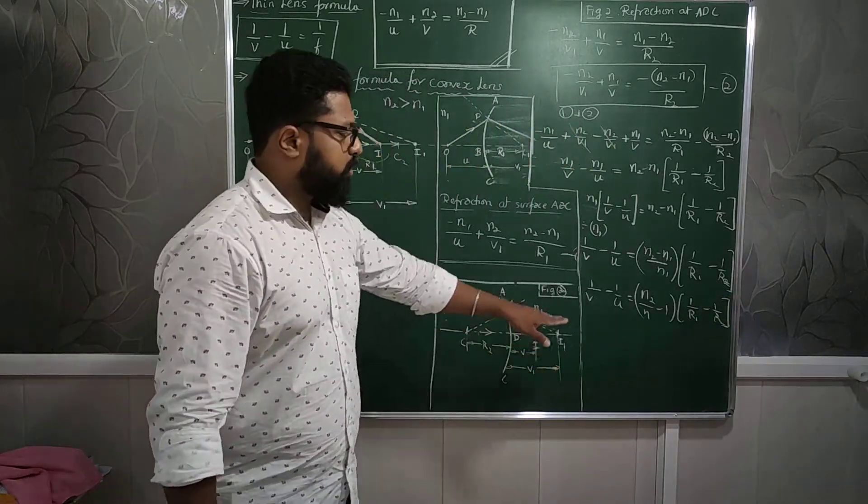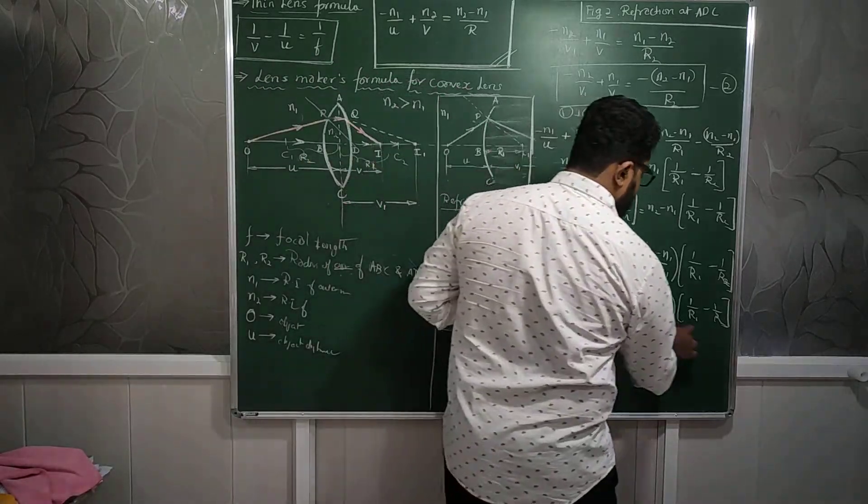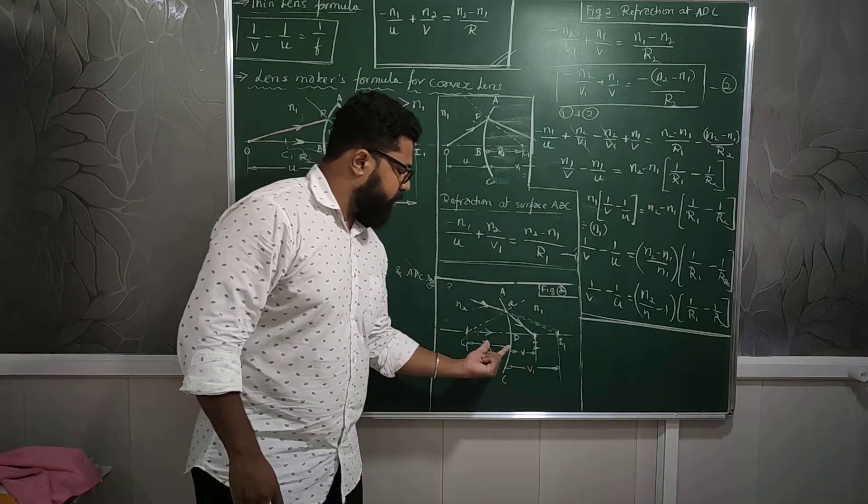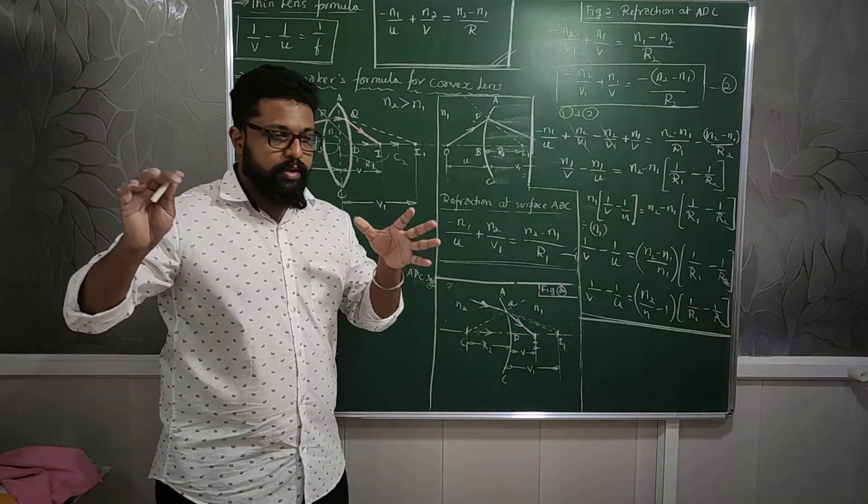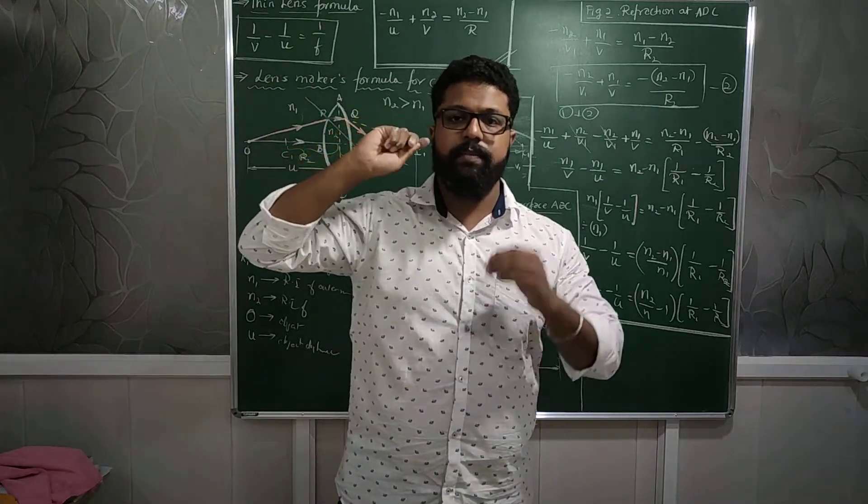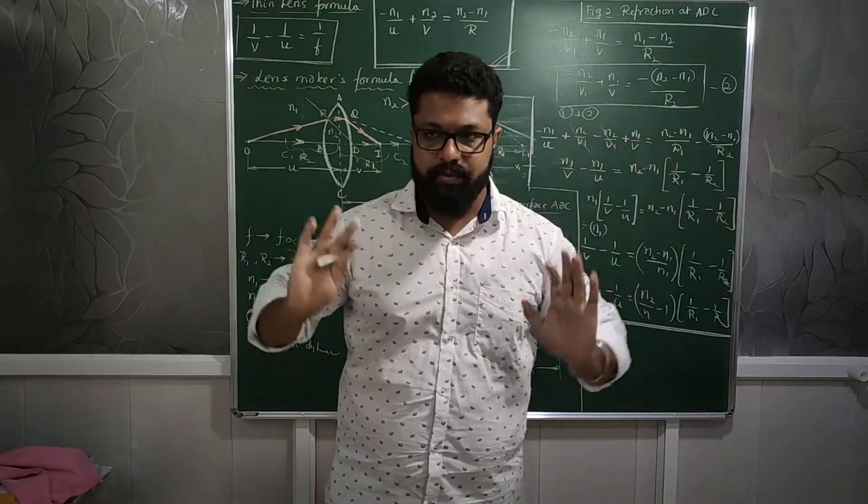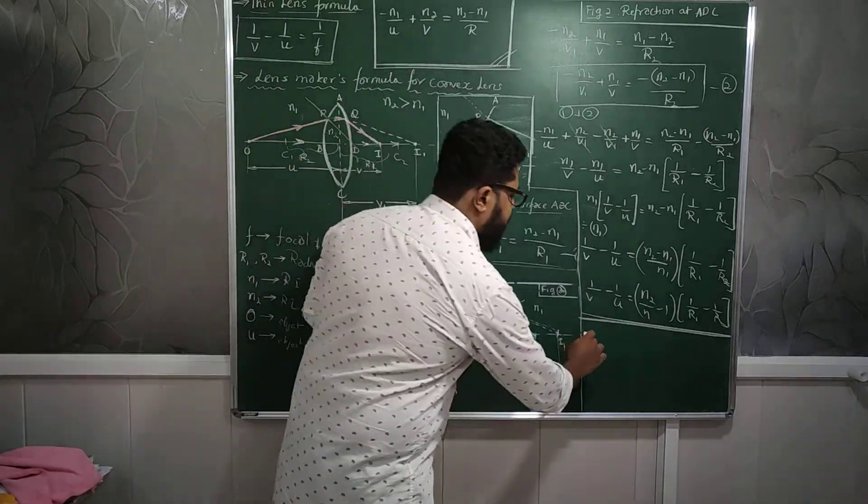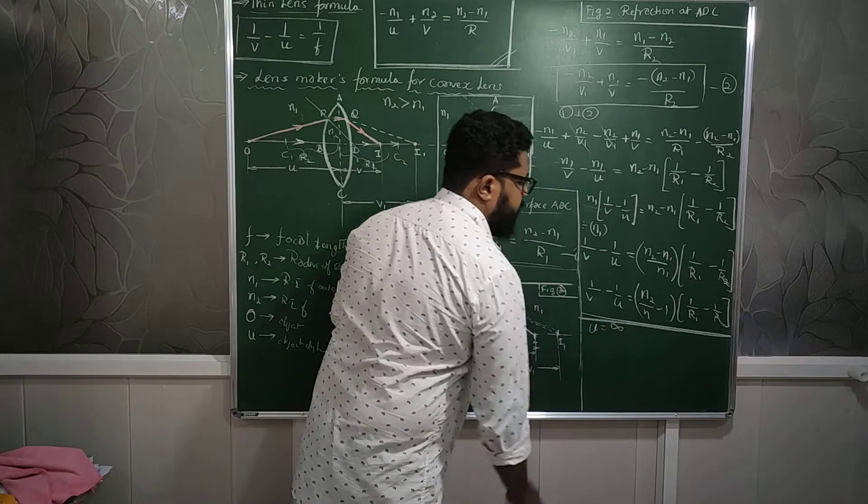So now to simplify this equation I come to the reality saying that the image will always, the object is always originated at the infinity. That means very far away. We don't know the exact position of that object. So we consider that the object is placed at infinity, which means the object distance is equal to infinity.